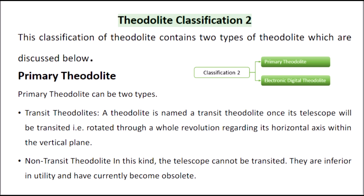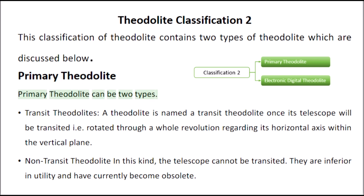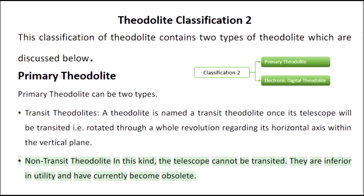Theodolite Classification 2. This classification contains two types of theodolite. Primary Theodolite can be two types: Transit Theodolites — a theodolite is named a transit theodolite when its telescope can be transited, that is, rotated through a whole revolution about its horizontal axis within the vertical plane. Non-transit Theodolite — in this kind, the telescope cannot be transited; they are inferior in utility and have currently become obsolete.